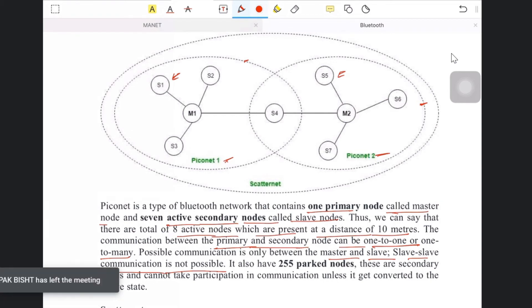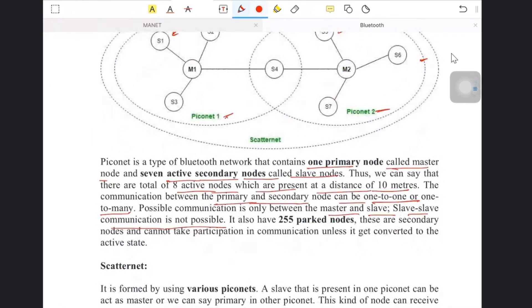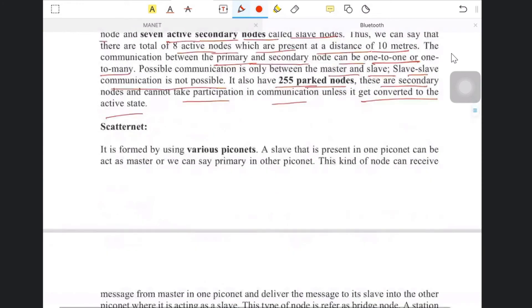If one is master, then the second and third cannot communicate with each other because they are not connected; they are connected with the first one, the master. It also has 255 parked nodes. These are secondary nodes and cannot take participation in communication unless they get converted to an active state.